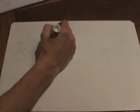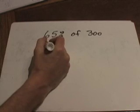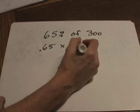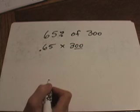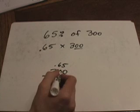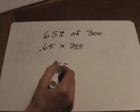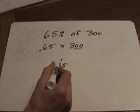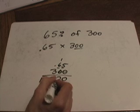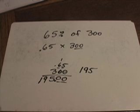What if we want to find 65 percent of 300? Well, 65 percent is the same thing as 0.65, so we multiply 0.65 times 300. Because of the zeros at the end, put 300 on the bottom and 0.65 on top. The two zeros tell us the answer will end in two zeros, so place those and multiply the rest: five times three is fifteen, carry the one; six times three is eighteen plus one is nineteen. Two decimal places in the problem means two in the answer, so the answer is 195. Sixty-five percent of 300 is 195.